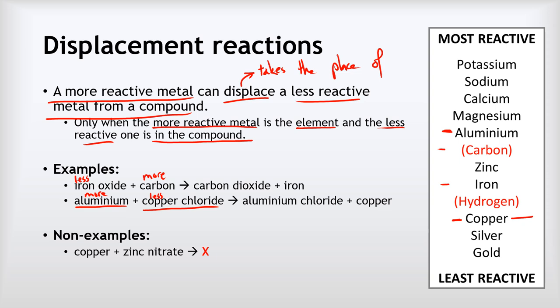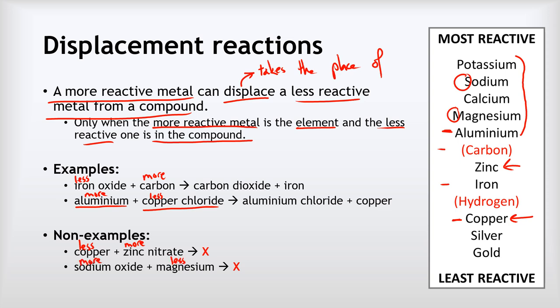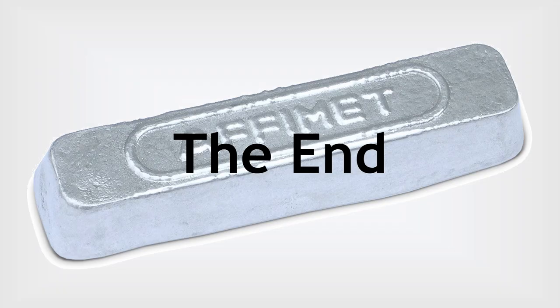Examples that don't work: copper and zinc nitrate — copper is less reactive than zinc, so a less reactive metal cannot displace a more reactive one from a compound. To displace zinc you'd need something more reactive than zinc. Equally, sodium oxide will not react with magnesium — sodium is more reactive than magnesium, and a less reactive metal cannot displace a more reactive metal from a compound, so no reaction occurs. That's it — thank you for listening!